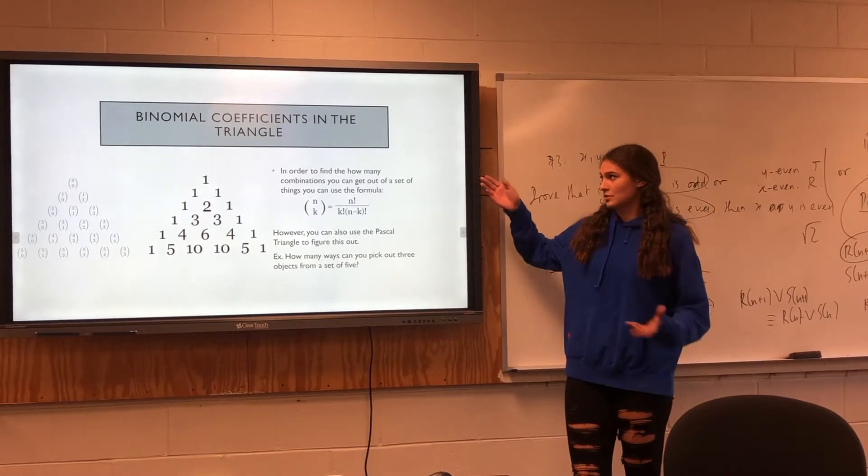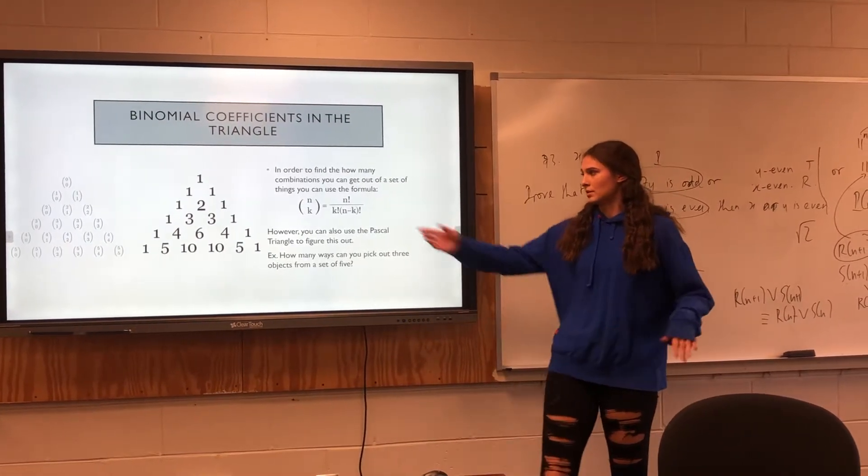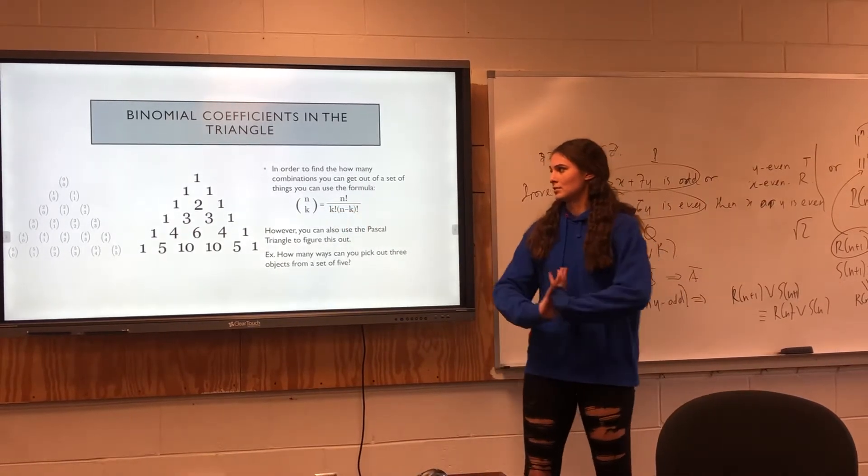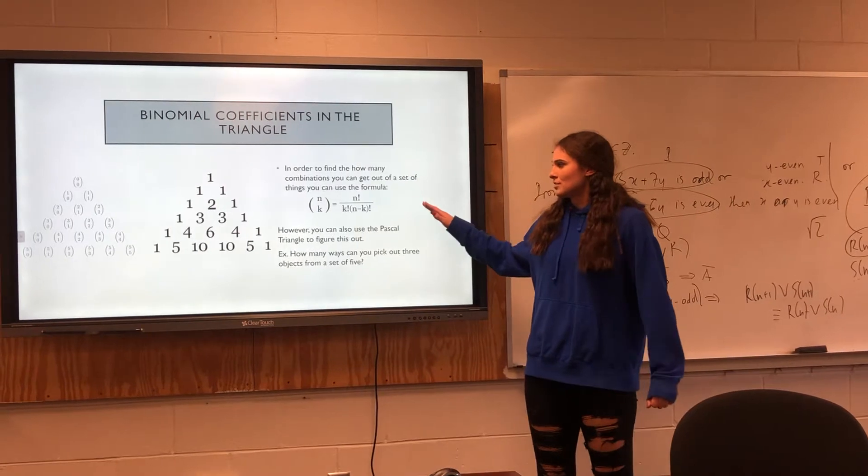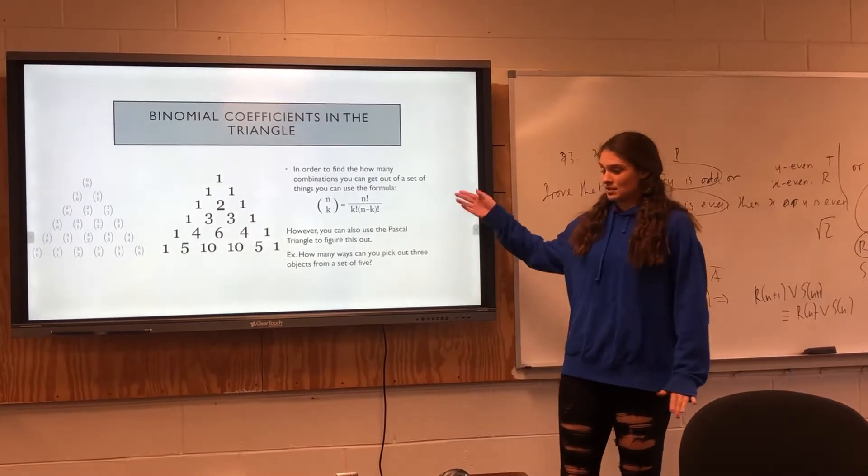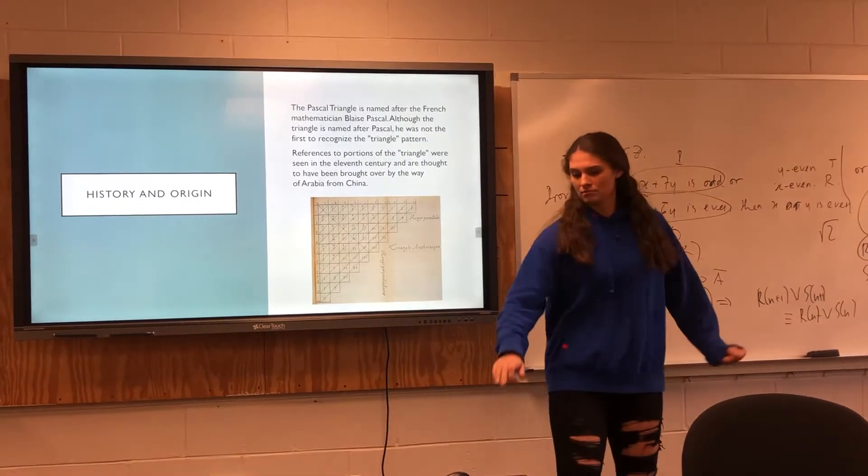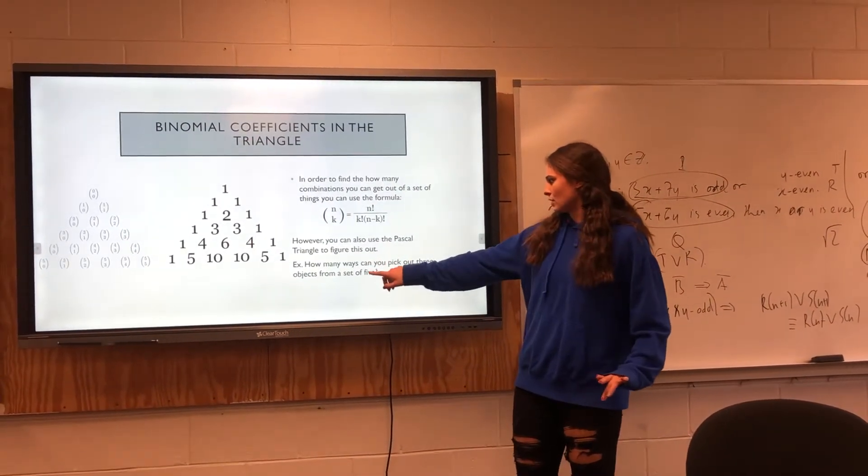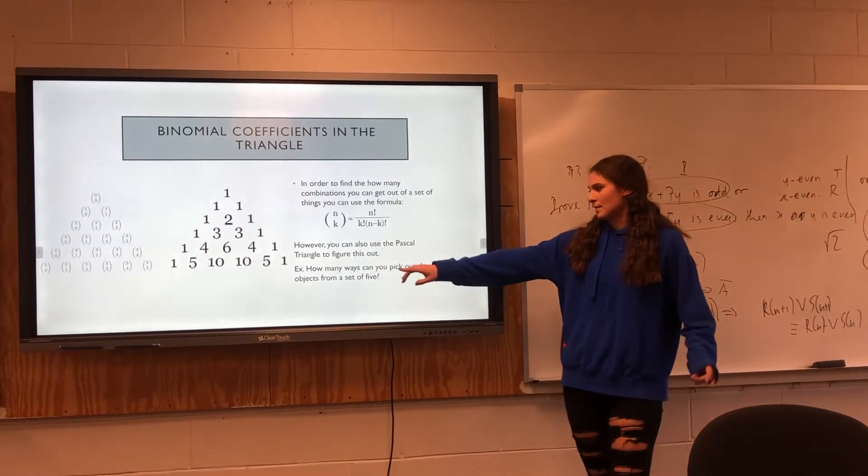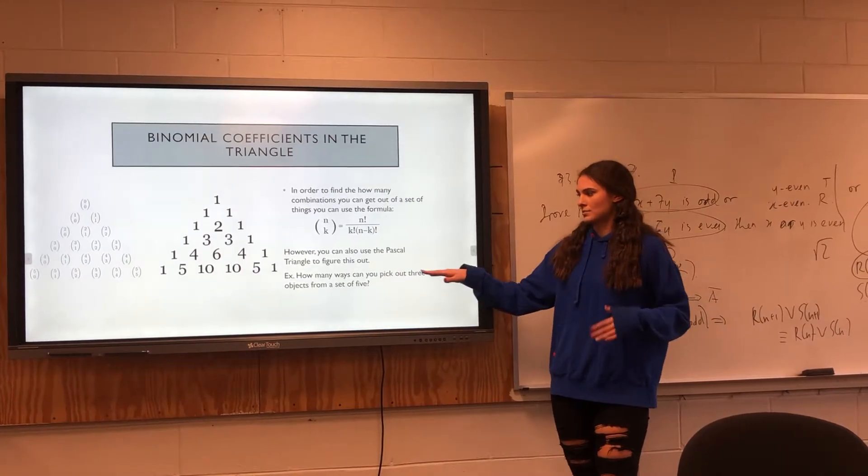In order to find how many combinations you can get out of a set of things, you can use the formula n factorial over k factorial times n minus k factorial. You can use that, which is used a lot in statistics, but you can also use the triangle. If you want to find out how many ways you can pick three objects from a set of five, you go to the triangle.